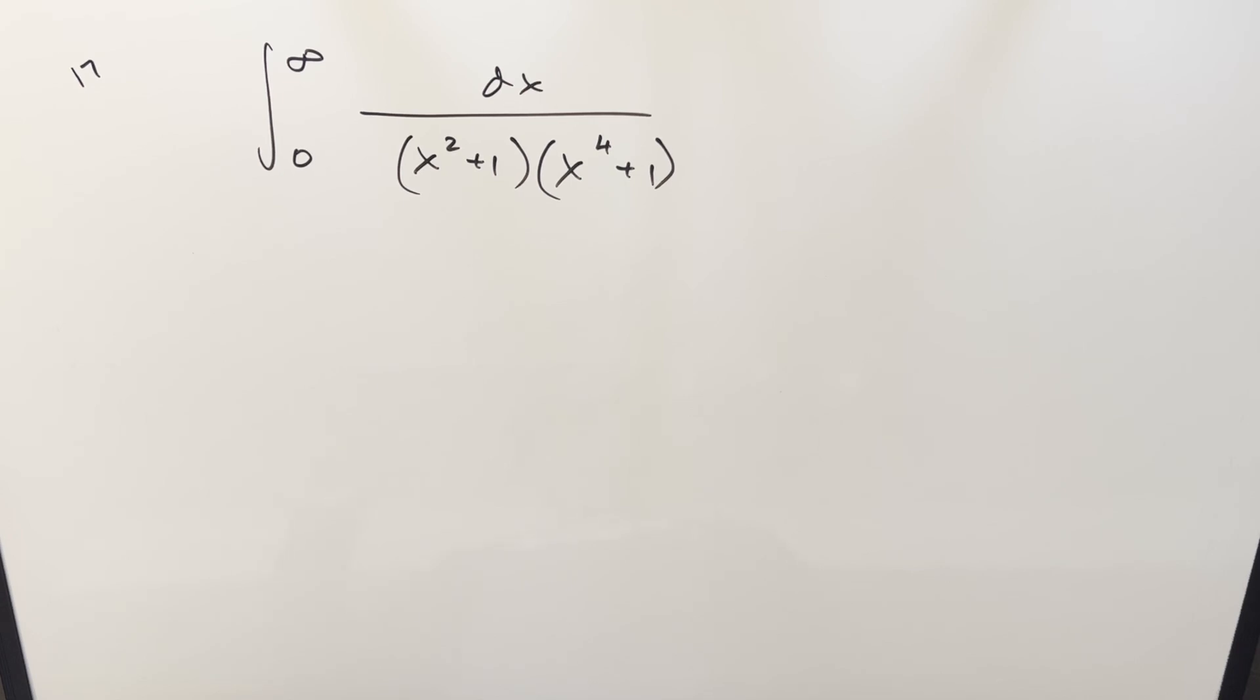We have here an interesting integral. This one's from Columbia Integration Bee 2025, number 17. We have the integral from zero to infinity of 1 over (x² + 1)(x⁴ + 1) dx.